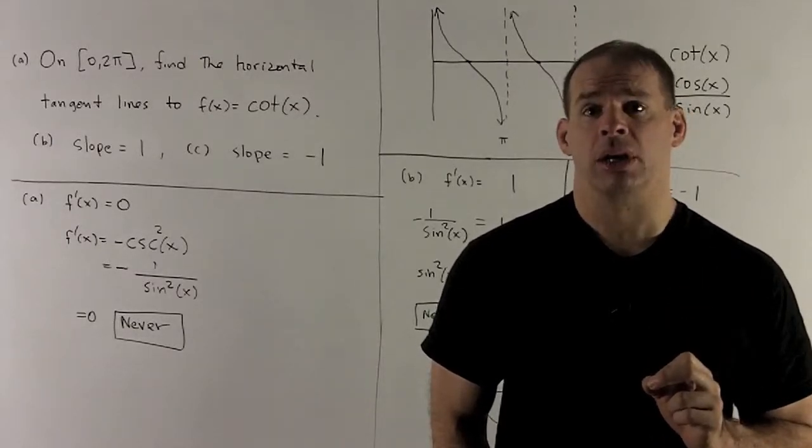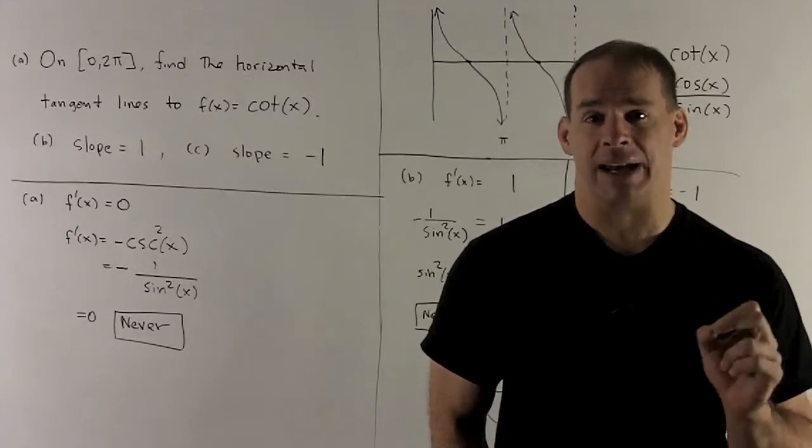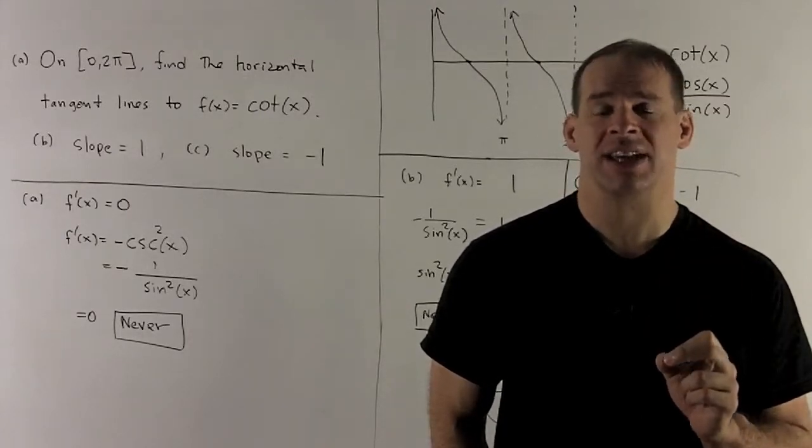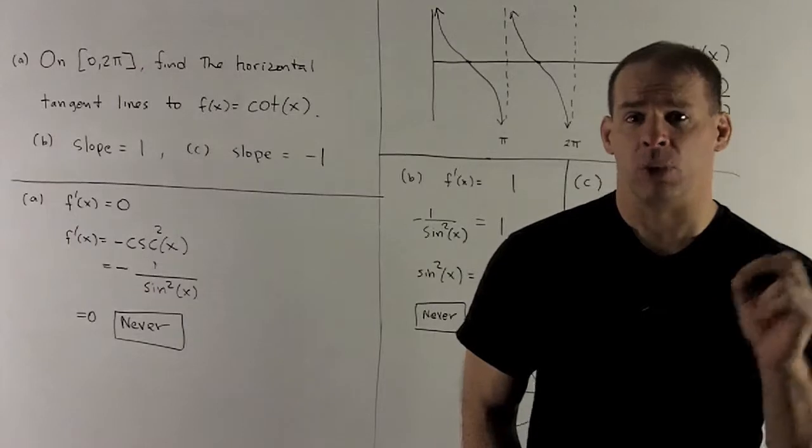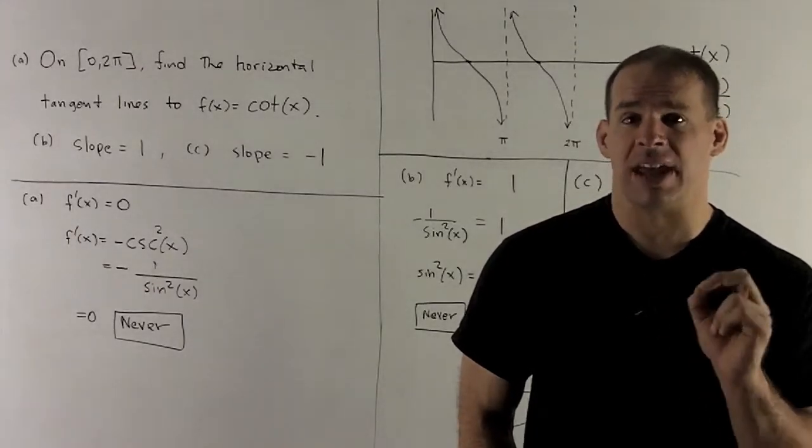Cosecant of x, remember, is 1 over sine of x. So, we're looking at the equation minus 1 over sine squared of x equal to 0. If we clear out the denominators, we're looking at minus 1 equal to 0. So, this never happens.